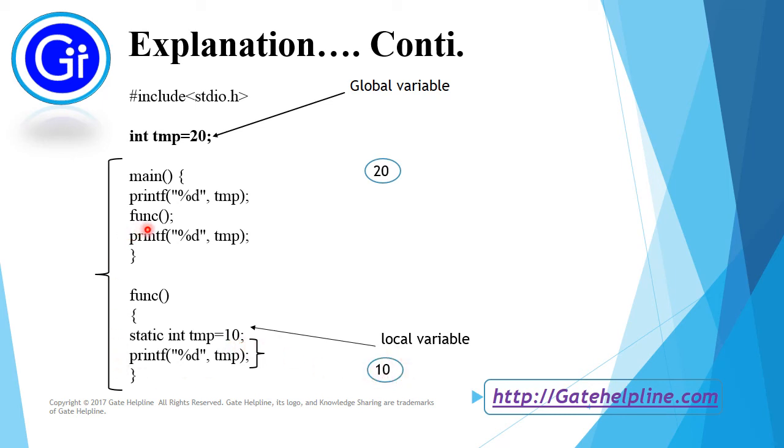After that the pointer came back to the function call. Now after that the statement is printf %d temp. Here again it will check for is there any value temp which is inside this scope.